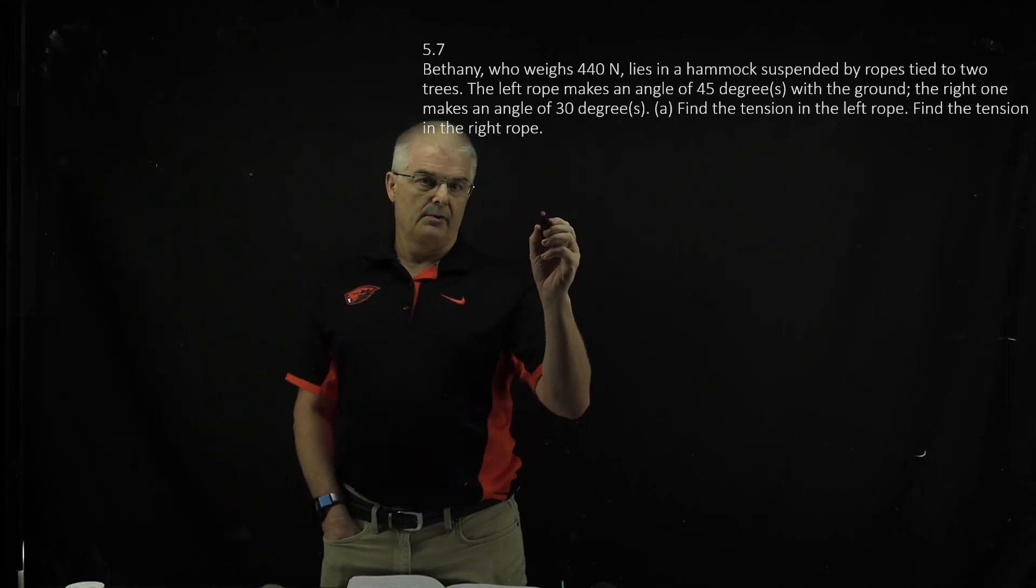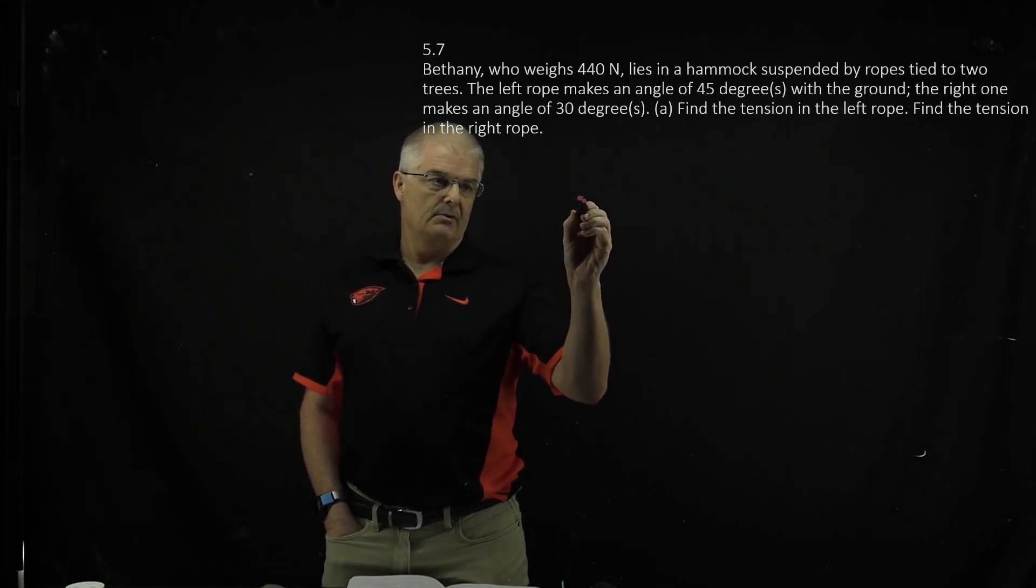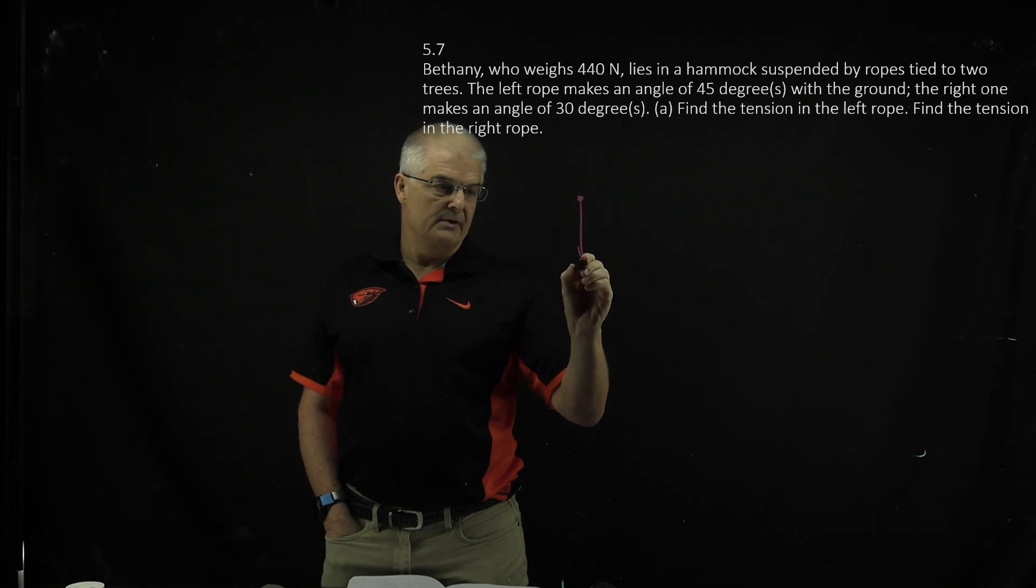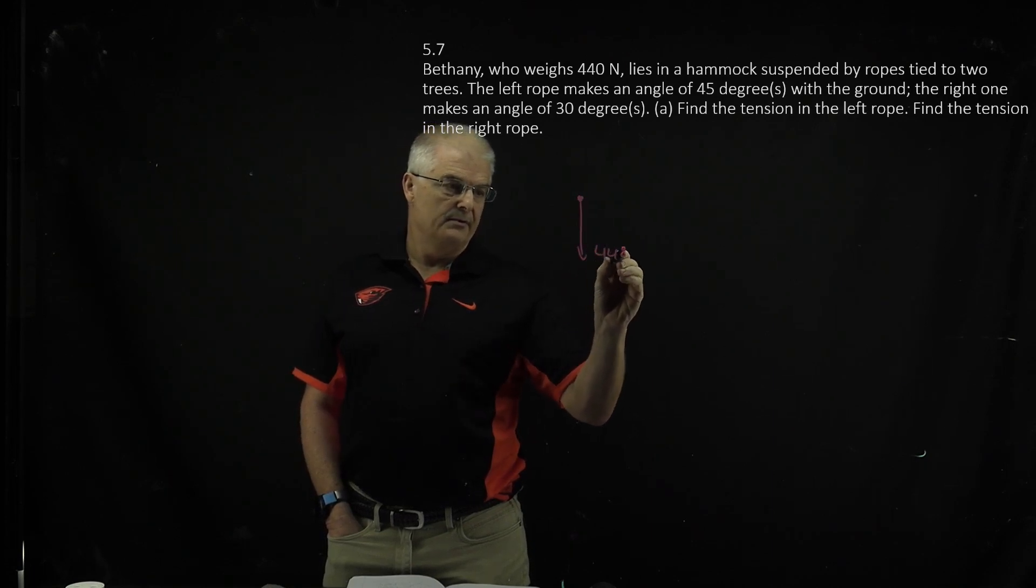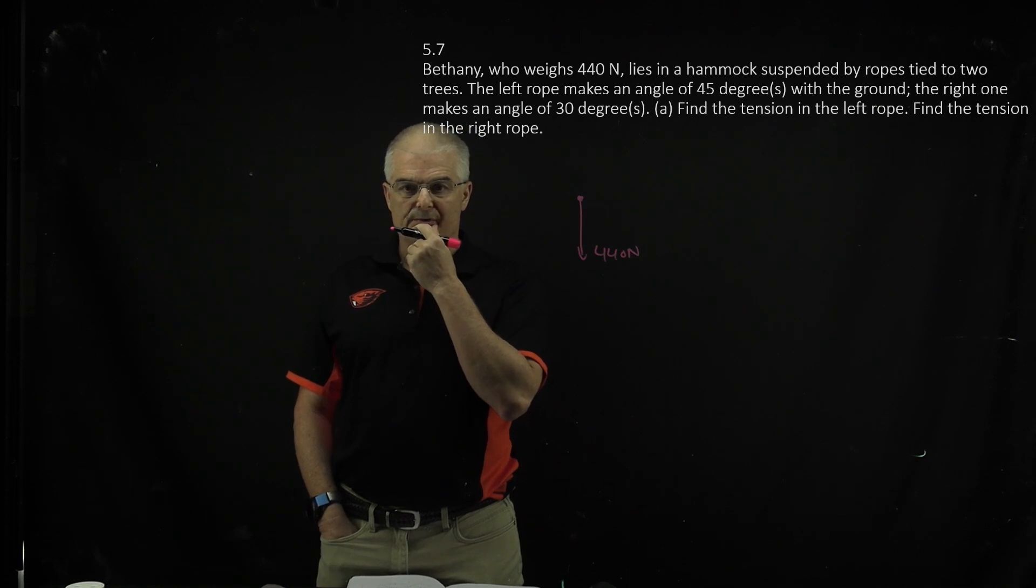So we've got Bethany who weighs 440 newtons, so gravity is going to be forced downward. This is 440 newtons, but then she's got this hammock at two different degrees tied to two trees.